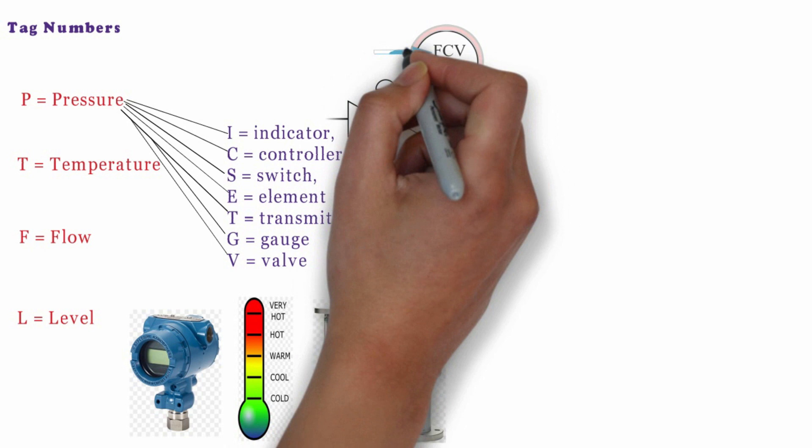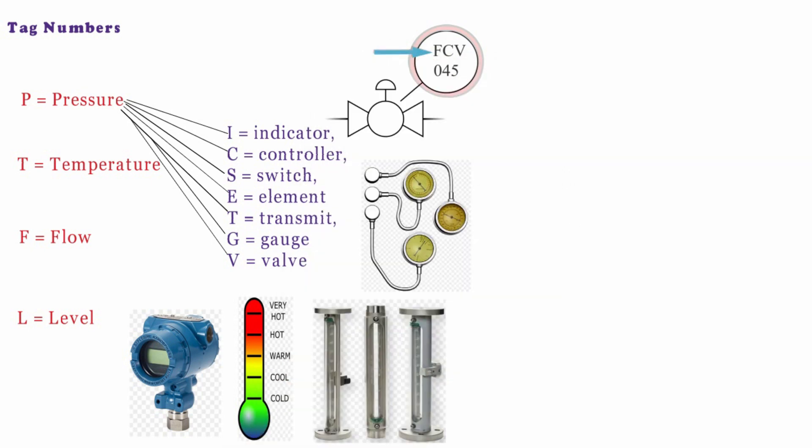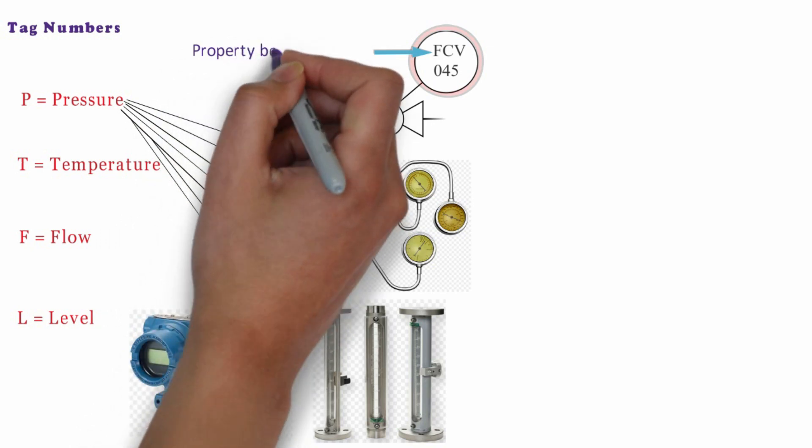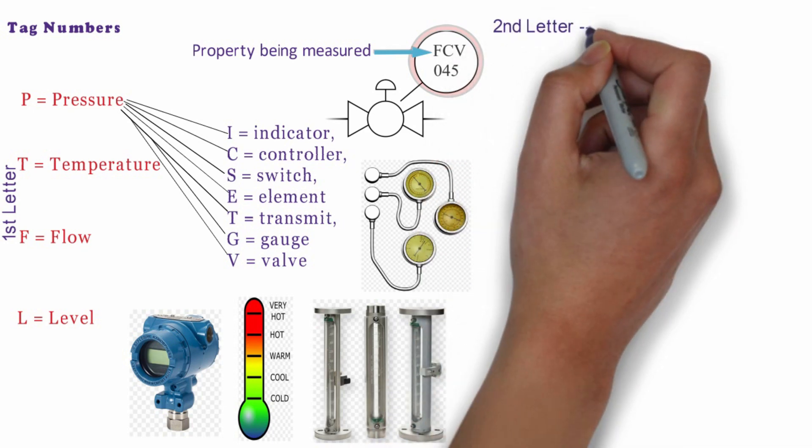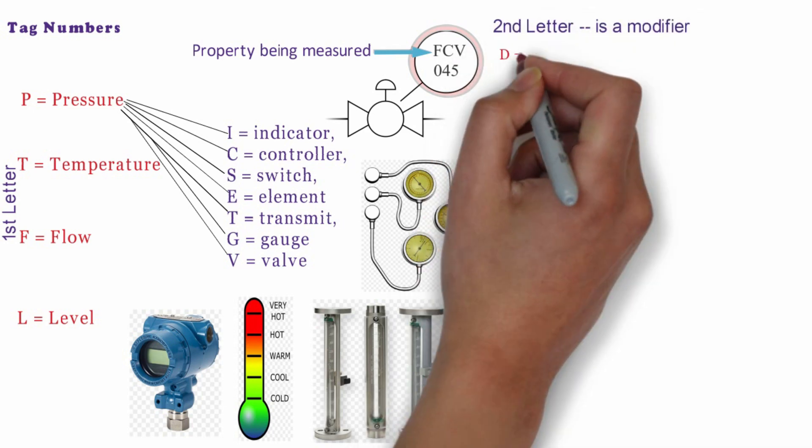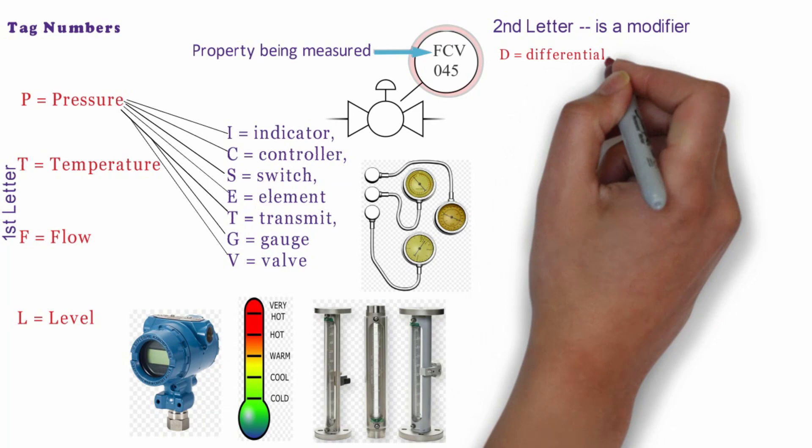The instruments are identified up to five letters. Two are a minimum. First letter is the property being measured like flow rate, pressure, temperature and level. Second letter is a modifier like D is for differential and F is for ratio.